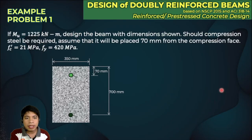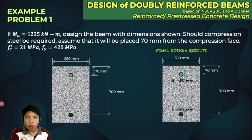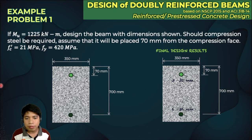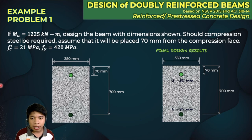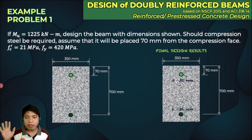The final design is: three 32 mm compression bars and six 36 mm tension bars. I hope you understood the discussion on the design of doubly reinforced beams. If you have questions, leave them in the comment section of this video on the Alking YouTube channel. Please like and subscribe — thank you and bye-bye!